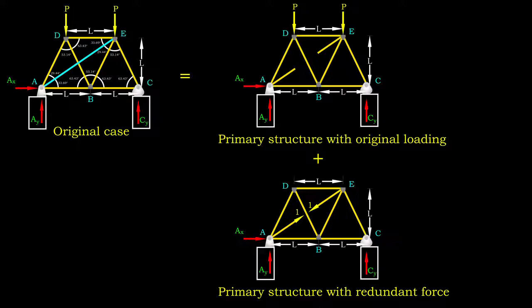Now, we have two analysis cases. The first case is where the primary structure is loaded with original loading. The second case, on the other hand, assumes unit tension acting on both halves of AE cut member. The load should align with the member orientation.